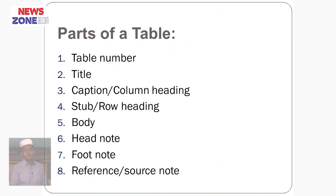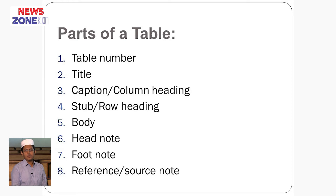Now let us discuss about the parts of a table. For presenting good data, we need to create a table which contains at least eight parts. These are: table number, title of the table, caption or column heading, stub or row heading, body, head note, footnote, and reference or source note.